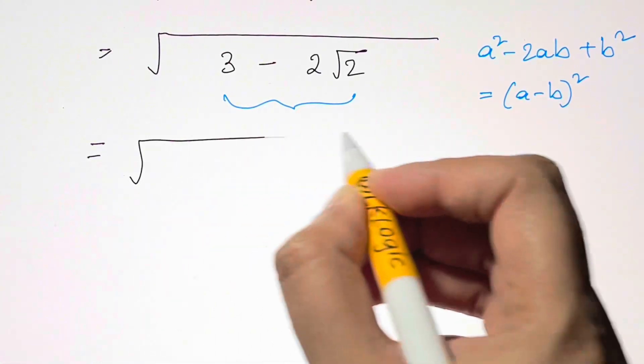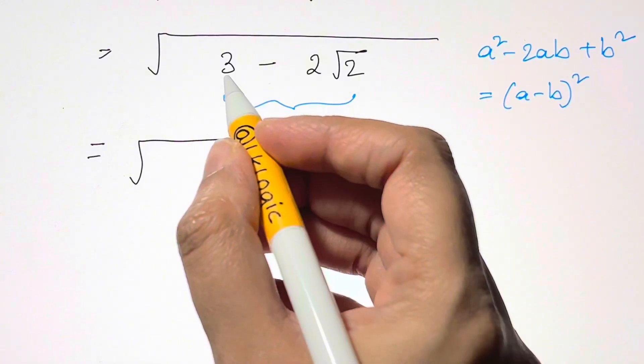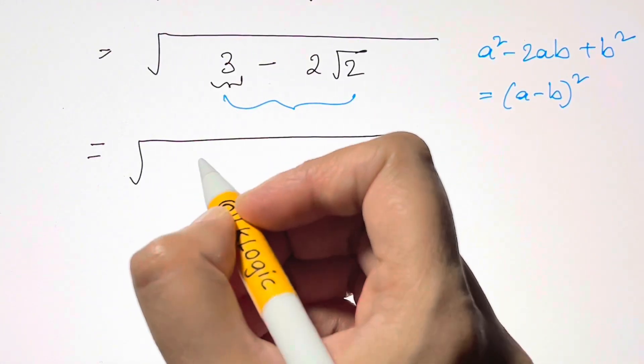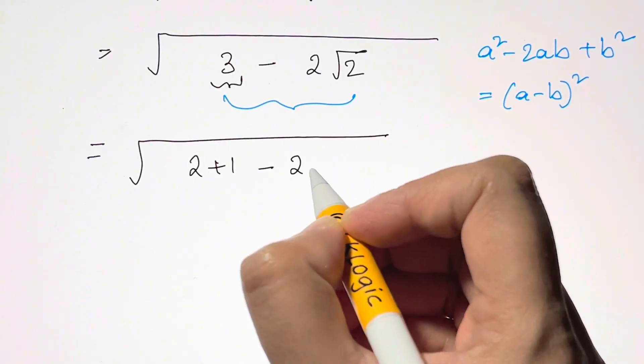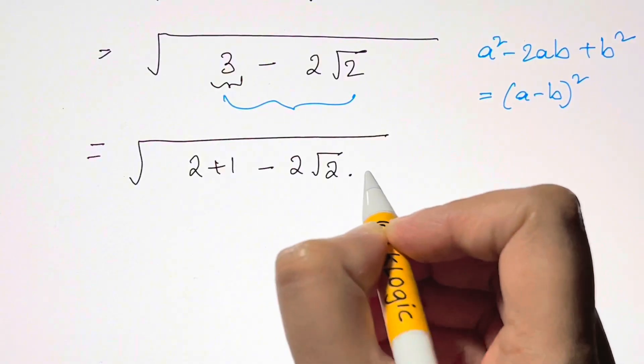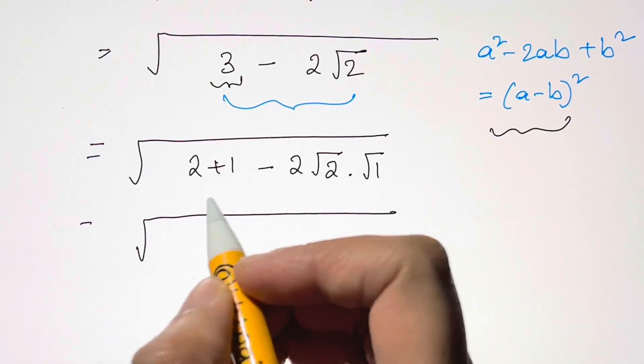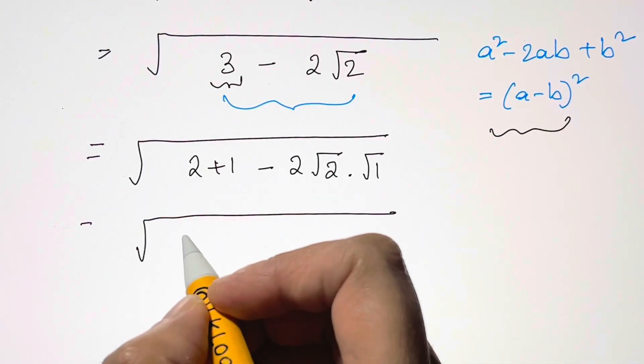So that will be under the root of 3 can be written as 2 plus 1 minus 2 root 2 times root 1. I'm going to rearrange this so that it looks exactly like that.